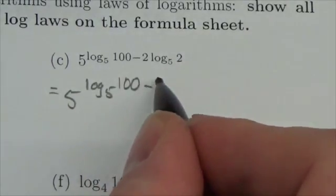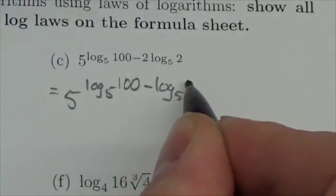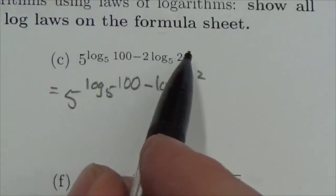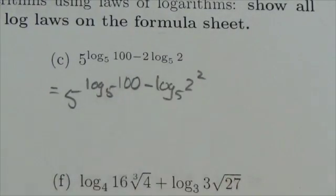exponent, so it's going to be minus log base 5 of 2 squared because I can take that coefficient and make it an exponent inside the logarithm.